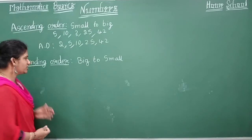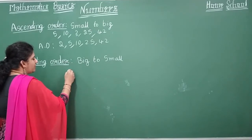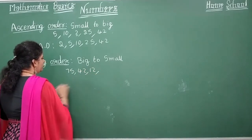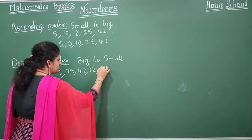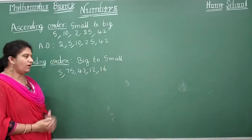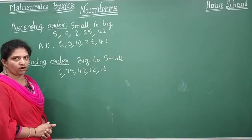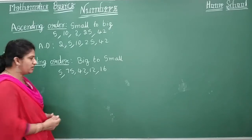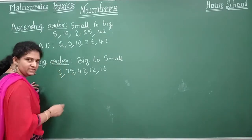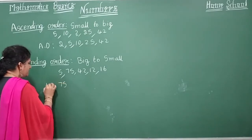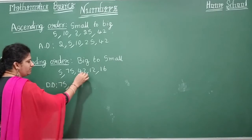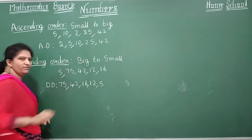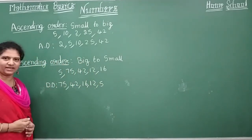Let's take one more example for descending order. Take these numbers: 75, 42, 12, 5, 60. Arrange these in descending order — descending goes from big to small. Which is the biggest number? 75 is the biggest. So descending order: 75, next 60, next 42, then 12, and 5. That is how we arrange numbers in descending order.